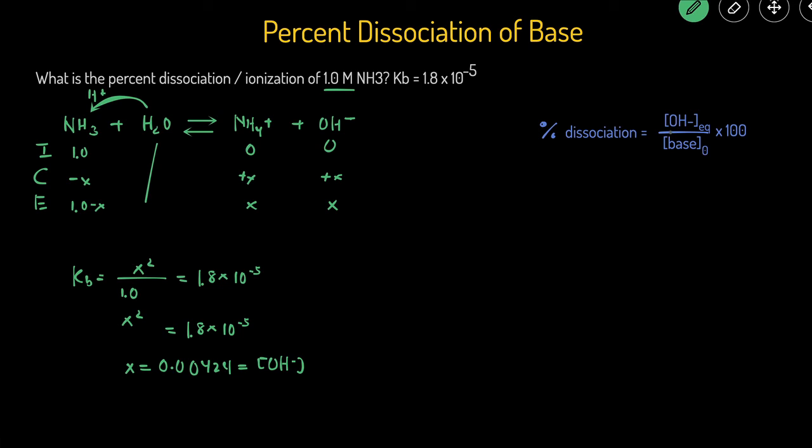Now we have the equilibrium concentration of OH minus. We can plug it in and get the percent dissociation. So that's going to equal 0.00424 divided by the original concentration of the base, which is 1.0, and then multiply it by 100.